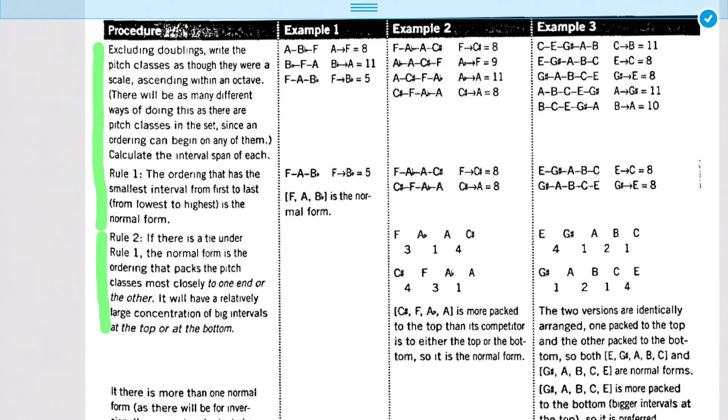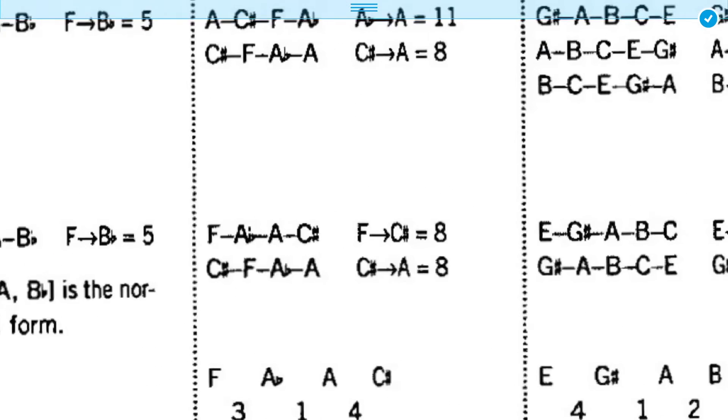Now, if you have a tie, that's what rule number 2 is about. If there is a tie under rule number 1, the normal form is the ordering that packs the pitch classes most closely to one end or the other. So, in other words, it will have a relatively large concentration of big intervals at the top or bottom.